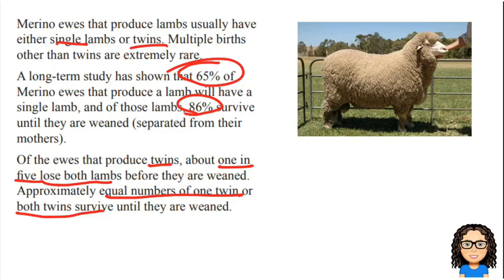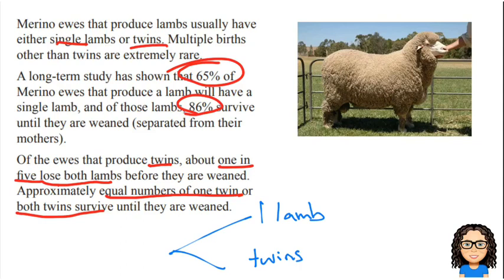So this is my scenario and I need to build up a tree diagram. I need to think about the structure — what's actually happening, what's the timing of these decisions, the collecting of the information. First of all, we've got these ewes and they're going to have a lamb — either one lamb or twins. That's our first layer of our tree.